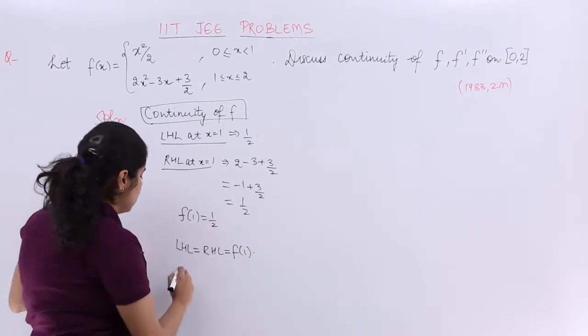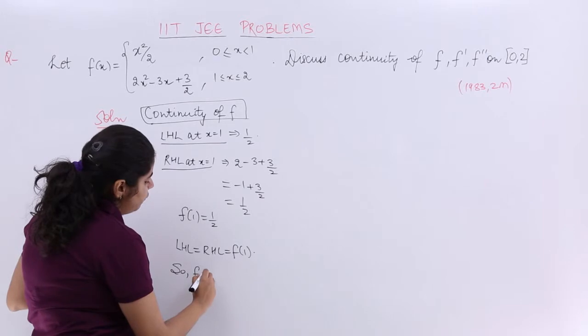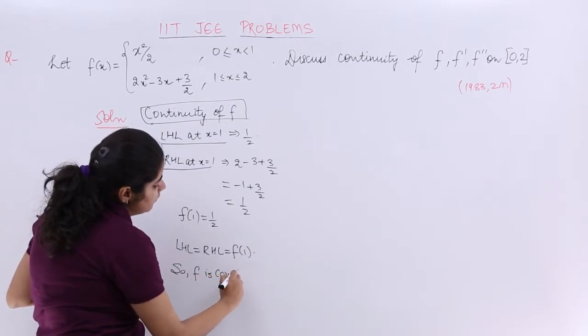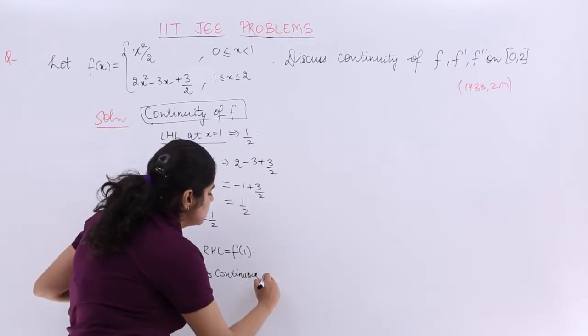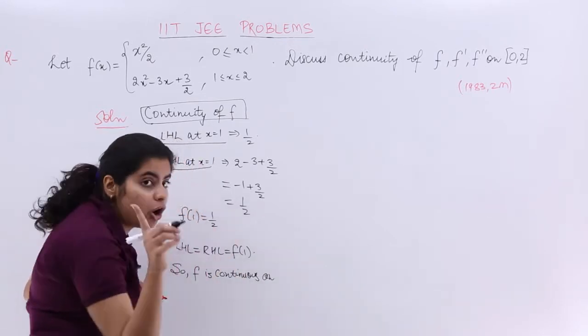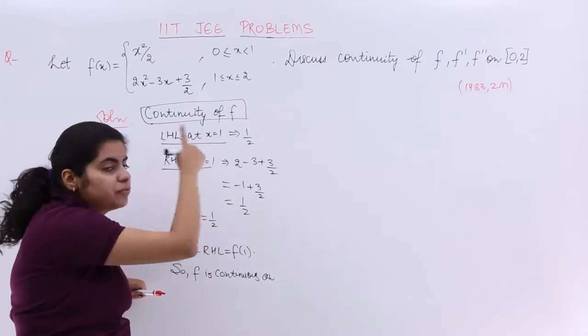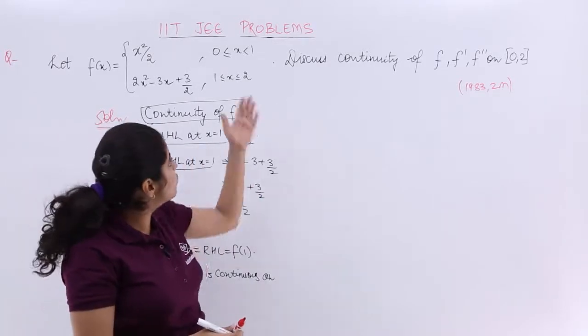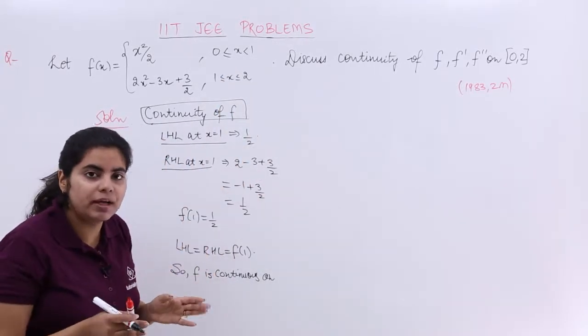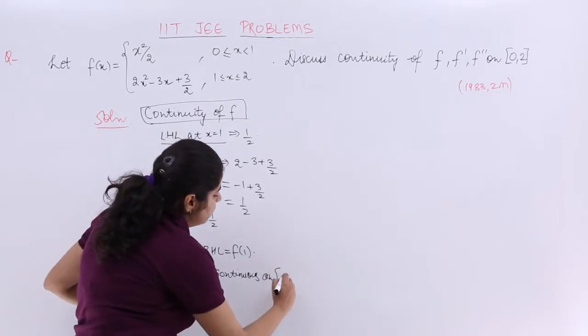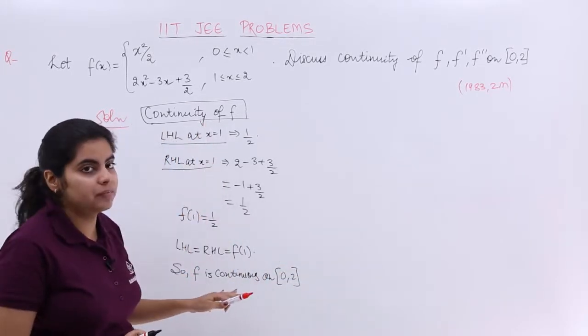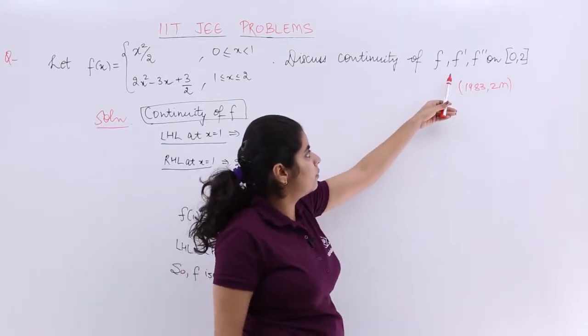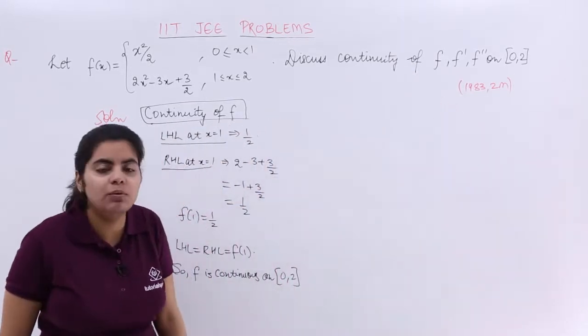So you have LHL equals RHL equals value of the function. So I say that f is continuous on [0,2] included both. So that is done. But the question is not complete. It is a subjective question, analytical one. f' also needs to be taken into consideration.